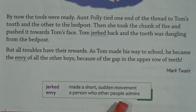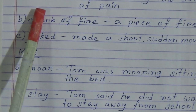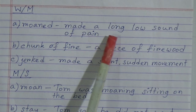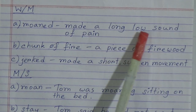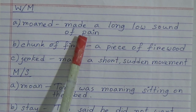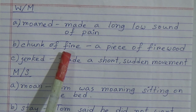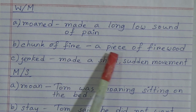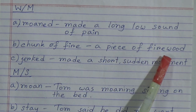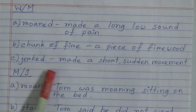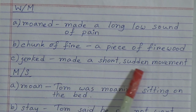Now the word meanings from the story. Number A: 'moaned' — made a long, low sound of pain. Number B: 'chunk of fire' — a piece of firewood. Number C: 'jerked' — made a short, sudden movement.